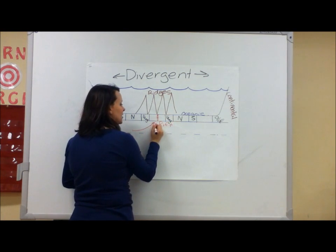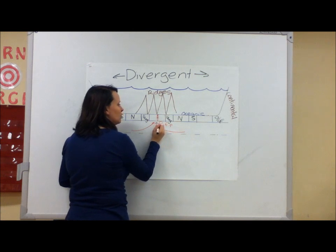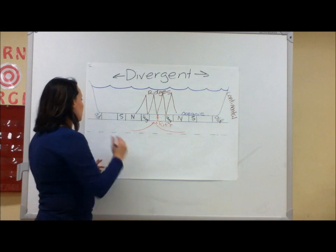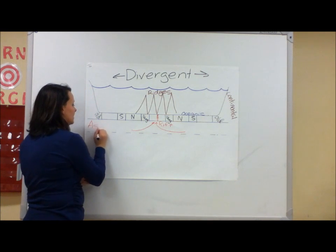At the rift, magma from the asthenosphere is able to come in and fill in the space, making new land. Remember, magma is found in the asthenosphere.